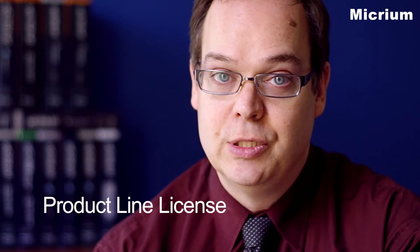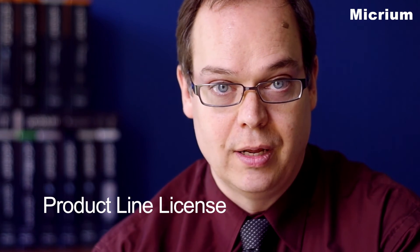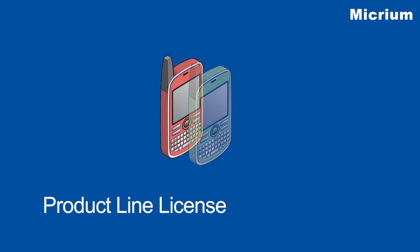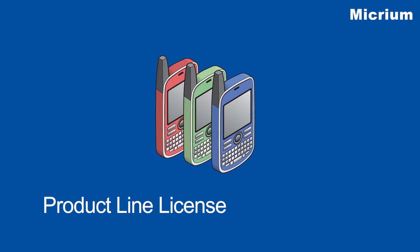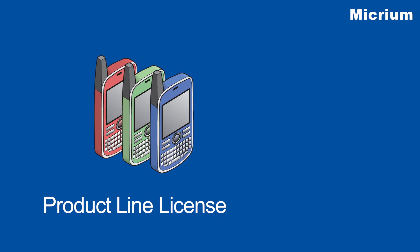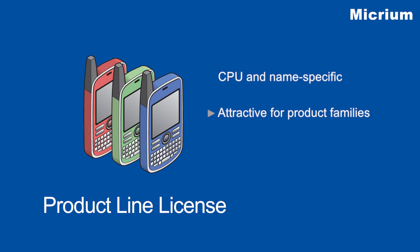The product line license allows you to embed Micrium software into a family of closely related products. This license is ideal for companies with a range of similar products that have minor variations but which are all based on a single underlying design. Many companies start off with a single product license and then, as their product line grows, move to a product line license to take advantage of its attractive pricing.